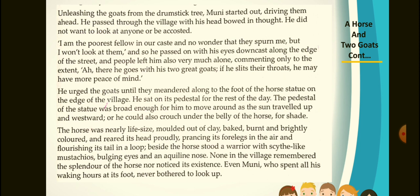Unleashing the goats from the drumstick tree, Muni started out driving them ahead. He passed through the village with his head bowed in thought. He did not want to look at anyone or be accosted. 'I am the poorest fellow in our caste and no wonder they shun me, but I won't look at them.' And so he passed on with his eyes downcast along the edge of the street. People left him alone, commenting only: 'Ah, there he goes with his two great goats. If he slits their throats, he may have more peace of mind.' He marched the goats until they meandered along to the foot of the horse statue on the edge of the village, where he sat on its pedestal for the rest of the day.